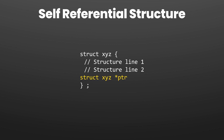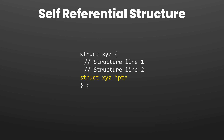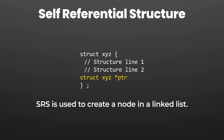A structure looks something like this — we have a structure xyz that contains some information. A self-referential structure is a structure that contains a pointer of its own data type. In our example, structure xyz contains a pointer variable of data type struct xyz.